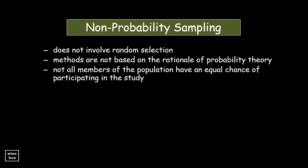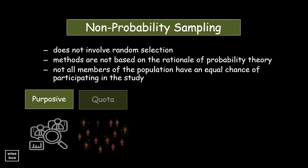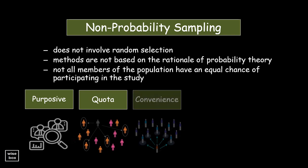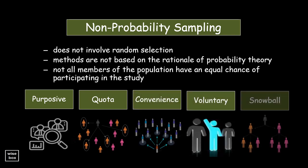Sampling methods under non-probability sampling include purposive, quota, convenience, voluntary, and snowball.